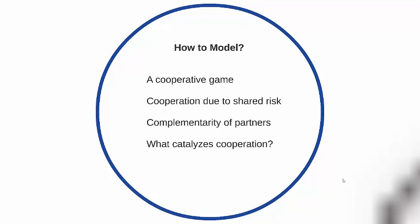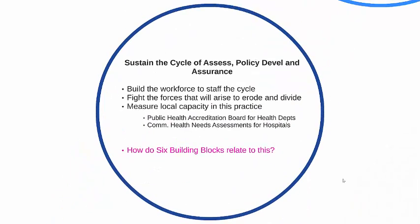How do we model what we are doing? How do we use complex adaptive systems to model a cooperative game? First, we want to show who the players are — who are the operators in this public health cycle — and show how they have a reason to cooperate because they share risk. What complementarities do they share? How do they work together and need each other? What catalyzes their cooperation? There has to be action by public health actors to make the cooperation happen — this will not be automatic. It's too easy to forget about prevention and focus all attention on curing the sick. We need to sustain the cycle of assessing, policy development, and assurance, and we need a workforce that knows it is their job to do that cycle.